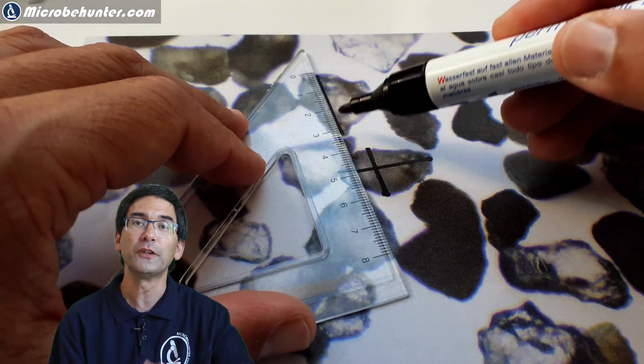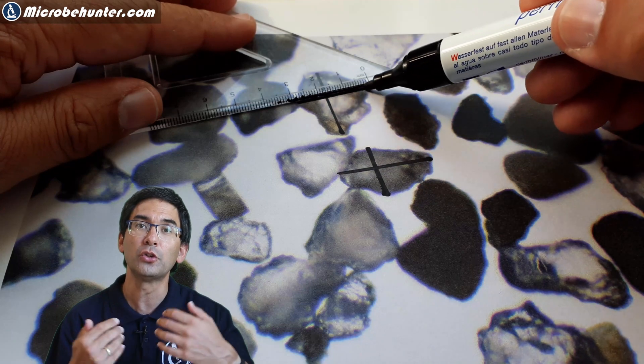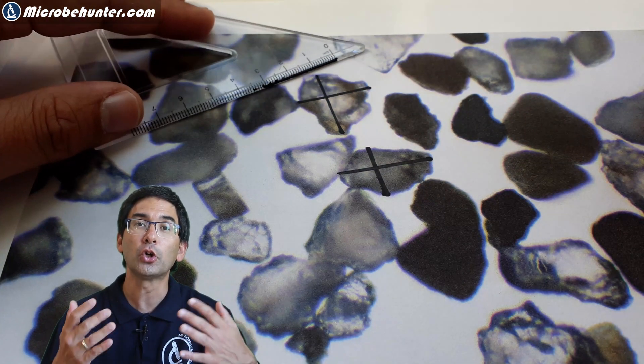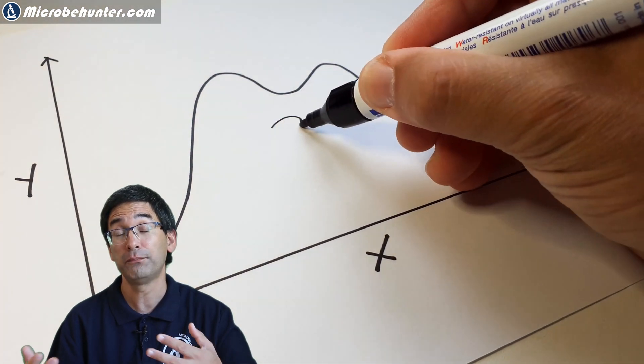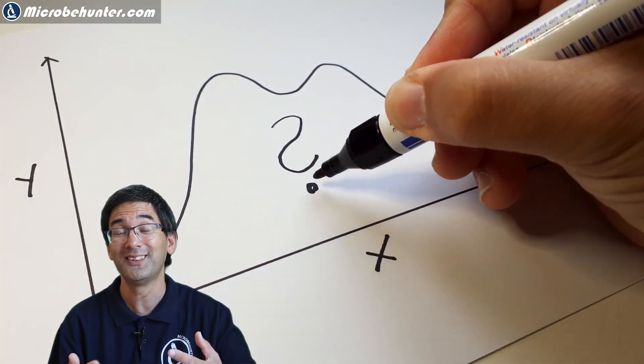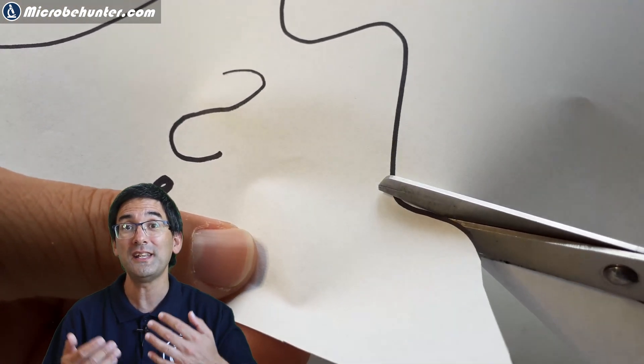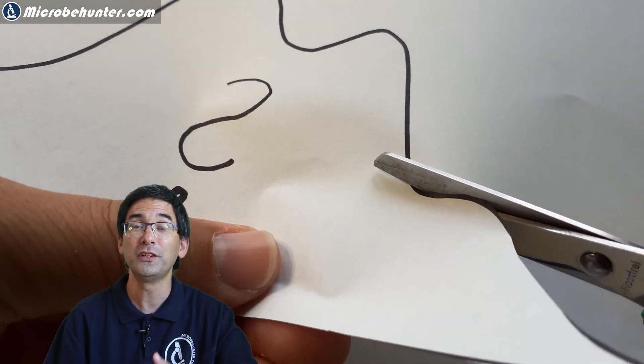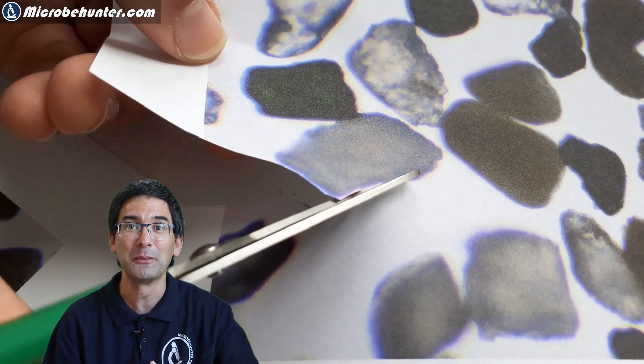However I want to use a different method. I want to use a method that they used many years ago to determine the area of a curve in math. What they've done is they didn't have computers yet so they have cut out the curve on paper and then they put the curve on a scale and by measuring the weight you can determine the area because the more weight there is, the larger the area.